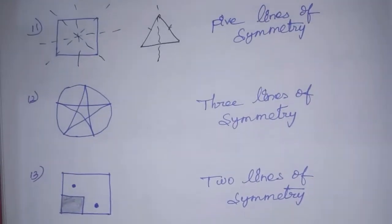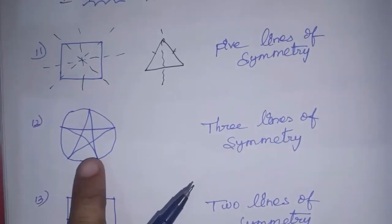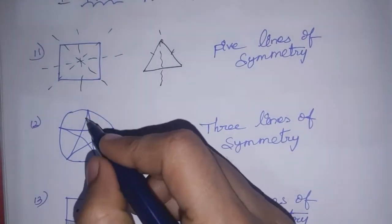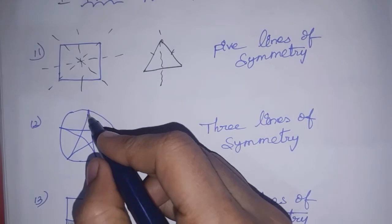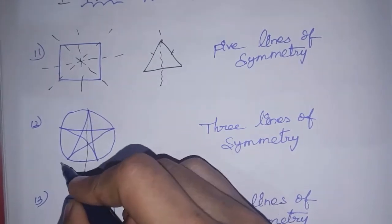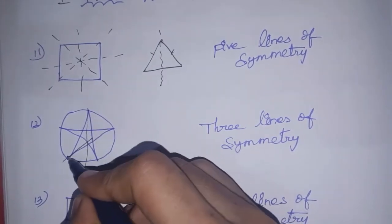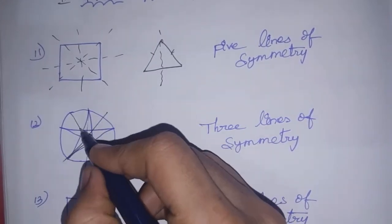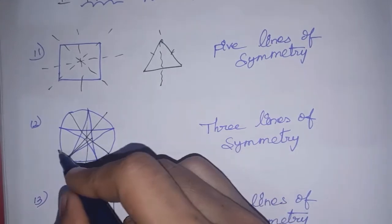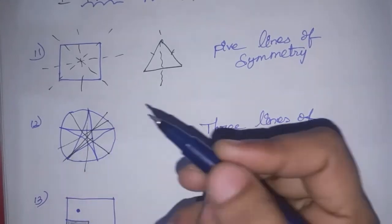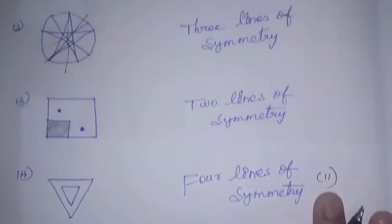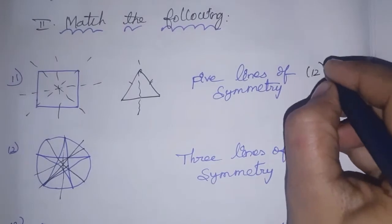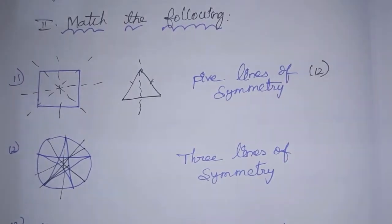Look at the twelfth sum — look at the star. This is the same line of symmetry. We can draw five lines of symmetry for the star.